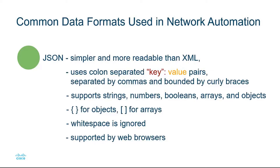JSON is simpler and more readable than XML. It uses colon-separated key-value pairs where the key is surrounded by quotes. JSON objects are separated by commas and bounded by curly braces. Objects can support strings, numbers, booleans, arrays, and other objects. Objects are surrounded by curly braces and arrays are surrounded by brackets. White space is ignored, and JSON, like XML, is supported by web browsers.